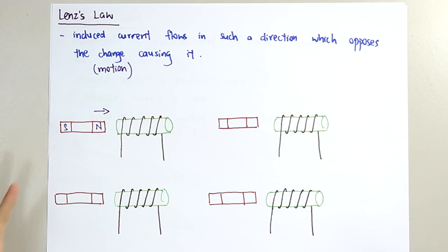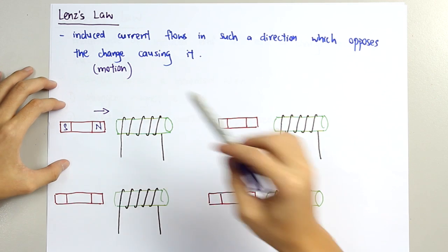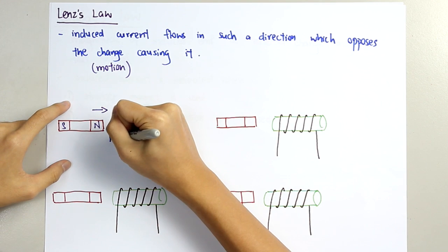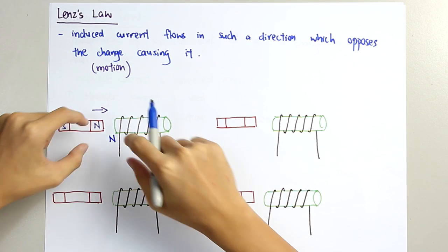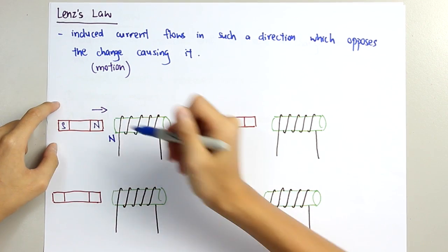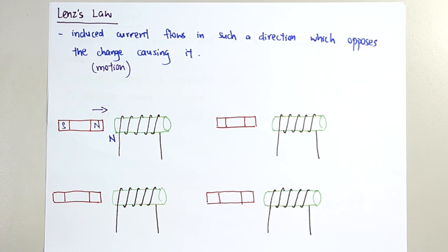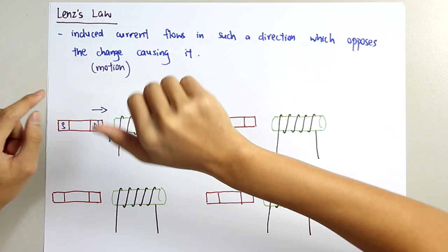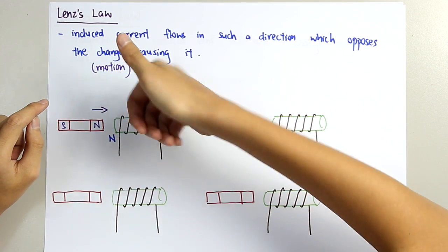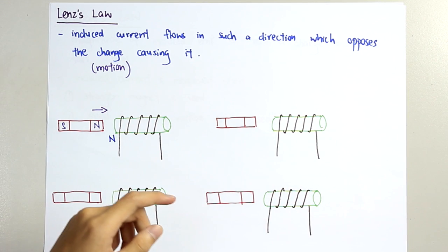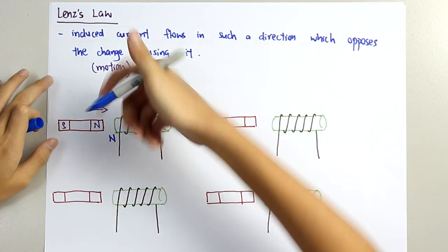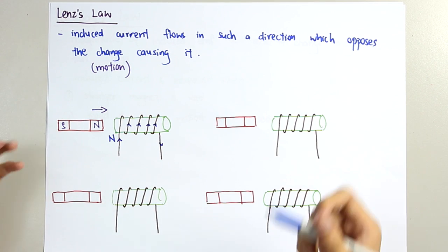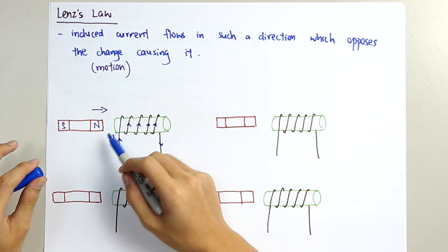To oppose the motion of the North Pole approaching, the induced current must cause the near side of the solenoid to also become a North Pole — because like poles repel, which will oppose the motion. Applying the right-hand grip rule, this gives us a North Pole at this side. The current flows in this direction, making this side of the solenoid act as a North Pole, thereby repelling the magnet and opposing the motion.